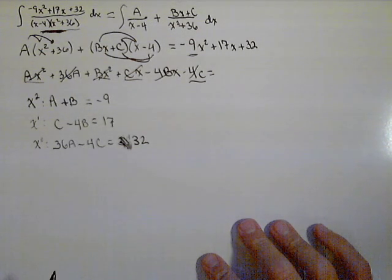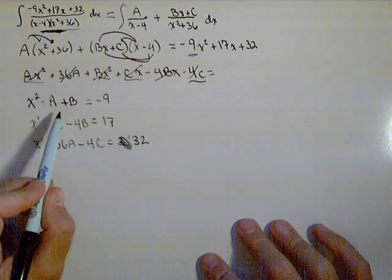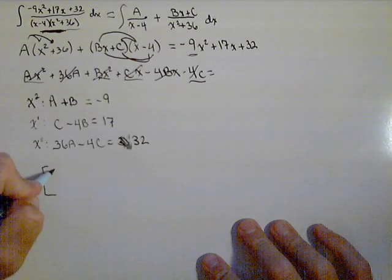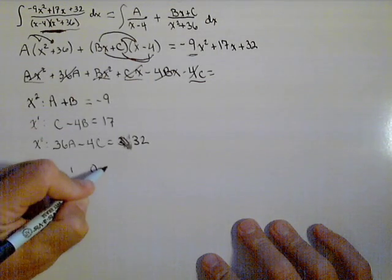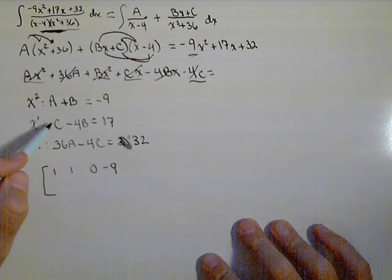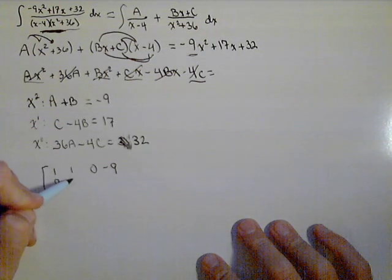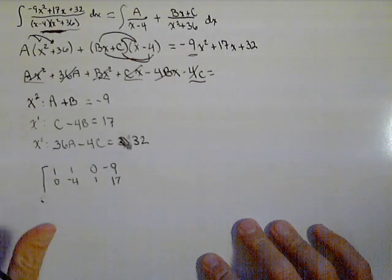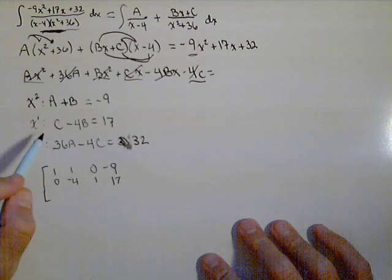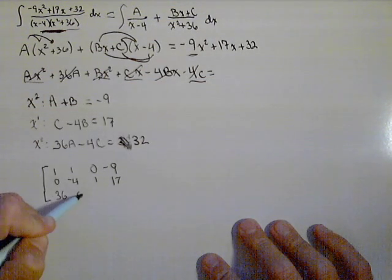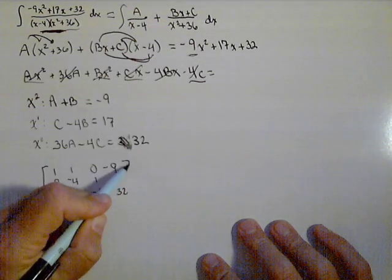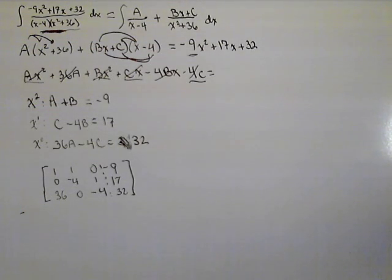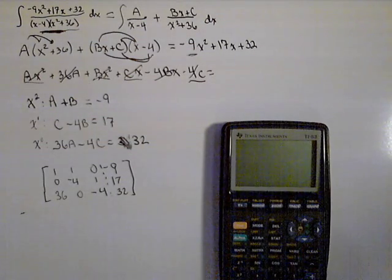All right. So let's see how we can set up a matrix and solve that matrix. So, if we were to set up a matrix, we'd have 1, 1, 0, negative 9. Here, there's no A. B is negative 4. C is 1. The solution is 17. And finally, we have 36. No B, a negative 4, and a 32. So there is our augmented matrix. And I'm gonna show you real quick how that can be calculated with a graphing calculator.